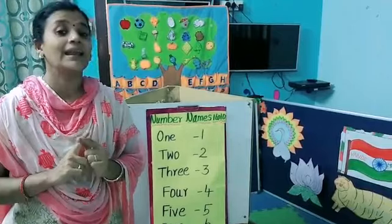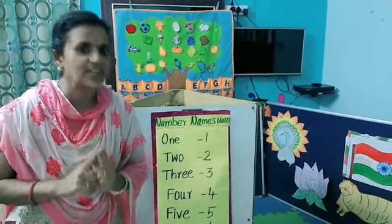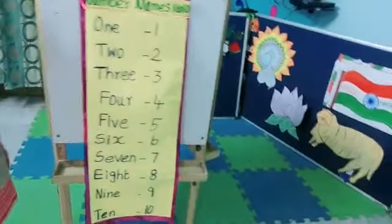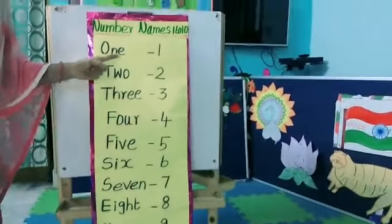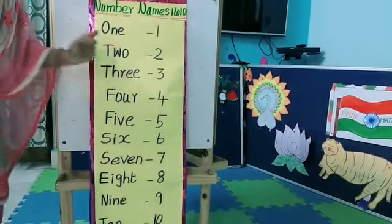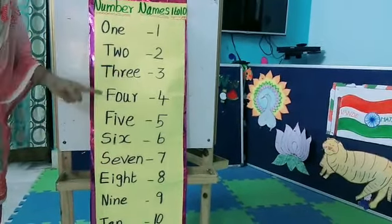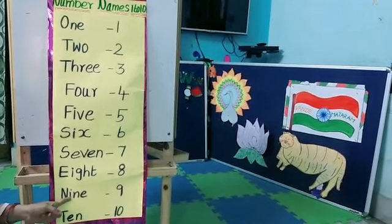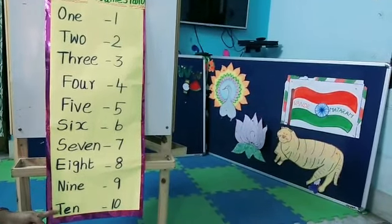Today we move on to number 11, the spelling of the number name of 11. First, see these number names from 1 to 10 — how to say them orally as well as written. O-N-E 1, T-W-O 2, T-H-R-E-E 3, F-O-U-R 4, F-I-V-E 5, S-I-X 6, S-E-V-E-N 7, E-I-G-H-T 8, N-I-N-E 9, T-E-N 10.